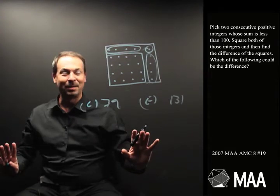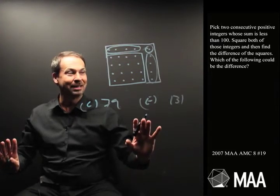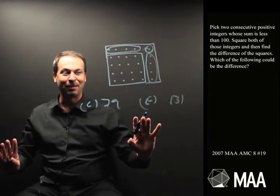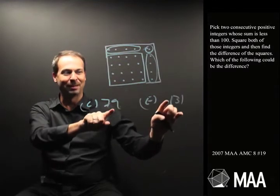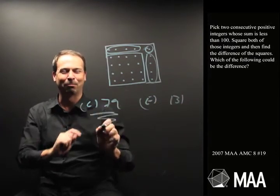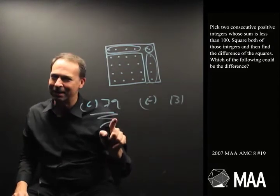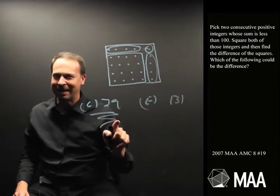Since the question said the numbers have to be small, they have to add up to less than 100, I bet the answer can't be too big. So they've given me one small answer and a bigger answer. My gut tells me that's probably the answer to the question. Could it really be 79? Is that really the right answer? Am I thinking correctly?